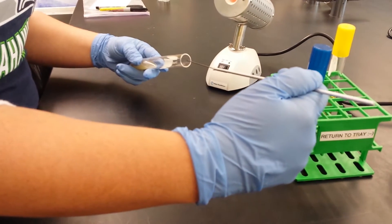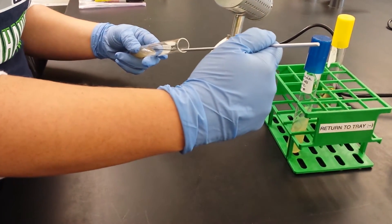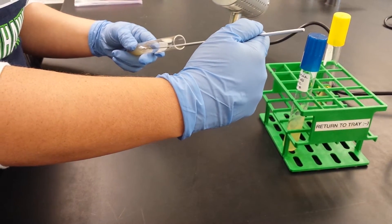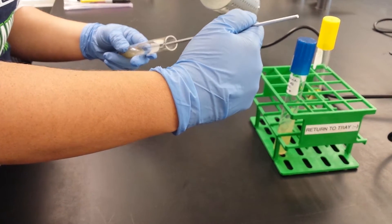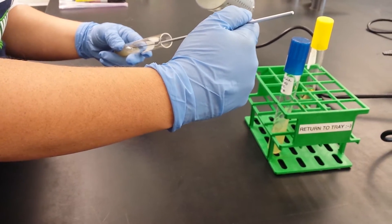So I'm going to put the loop in to pick up a little bit of bacteria. And I just kind of rub, we don't want to pierce the agar, get a little bit of bacteria on the loop.